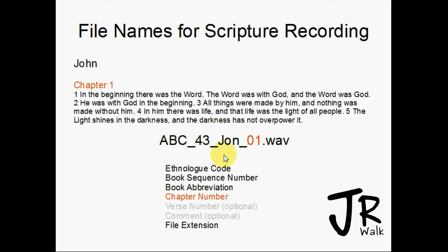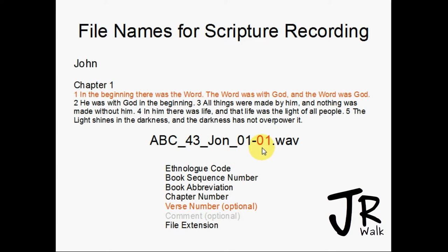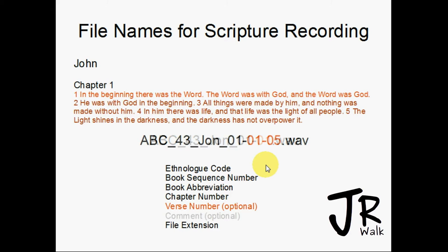If you want to split recordings up for a device like MegaVoice or Audio Bible, you might want to split per verse. So I would put dash-01 for verse one, dash-02 for verse two, dash-03 for verse three. If you wanted to do a section, I number the whole section zero-one through zero-five. It helps you know what they are, reads very easily, and sorts in the correct order.